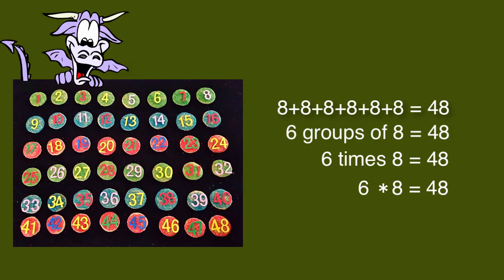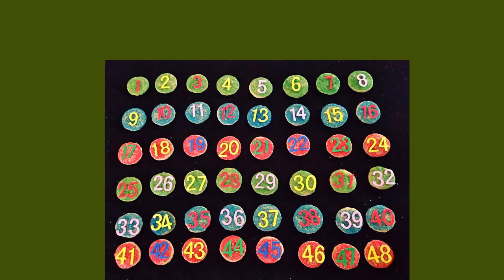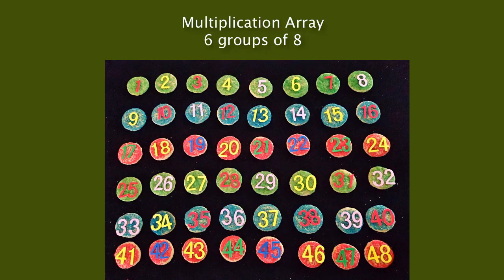This new operation is closely related to addition, because one way to figure out what 6 times 8 is, is to add 8 six times. But later we will find even a faster and easier way to solve these sorts of problems. You might have noticed that when I counted out the cookies, I organized them into rows and columns. This is called an array — 6 groups with 8 elements in each group.